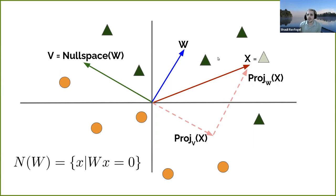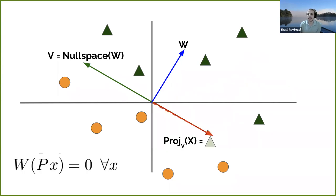So this is the essence of the operation that neutralizes the information. We take the original representation, find the separating plane by training a linear classifier, and project the original representation onto that plane. We get a representation which is very similar to the original but is no longer classified by gender.